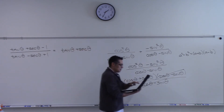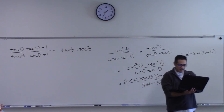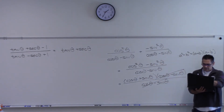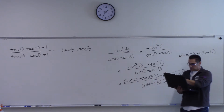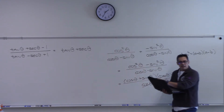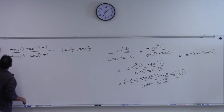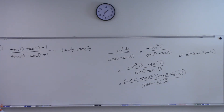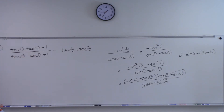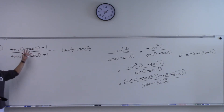I'm going to read the problem: tangent theta plus secant theta minus one is at the top. The denominator is tangent theta minus secant theta plus one, and that equals tangent theta plus secant theta. The thing that's really tricky about this one — what should look weird to you — is that the numerator and denominator each have three terms. Most problems up to here had two terms on each side. Here we have three and three.